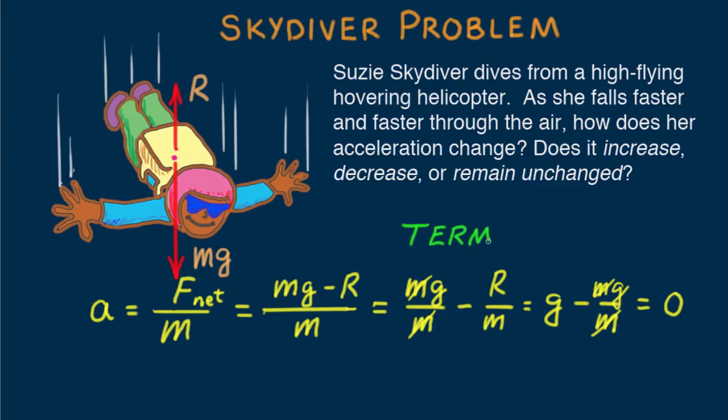At this point, she'd have reached what we call her terminal speed, or terminal velocity. Reaching terminal velocity means zero acceleration, and she falls at constant velocity.